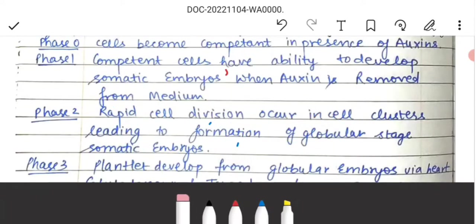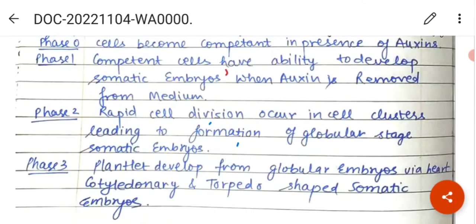Phase 3: plantlets are developed from globular embryos. What happens is: first the globular stage, then the heart-shaped stage, and then the torpedo-shaped stage.